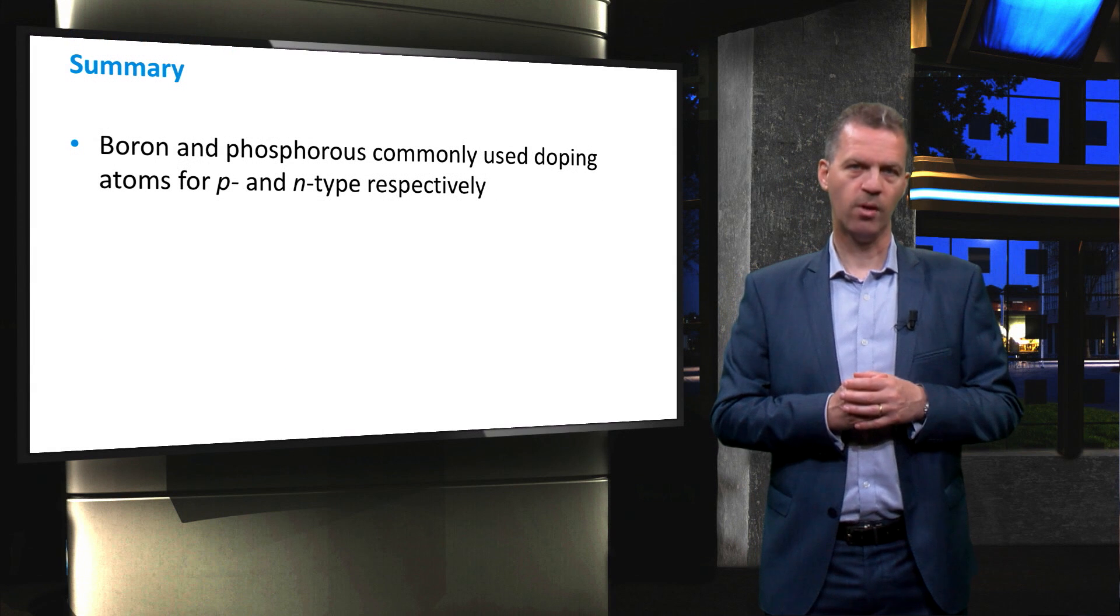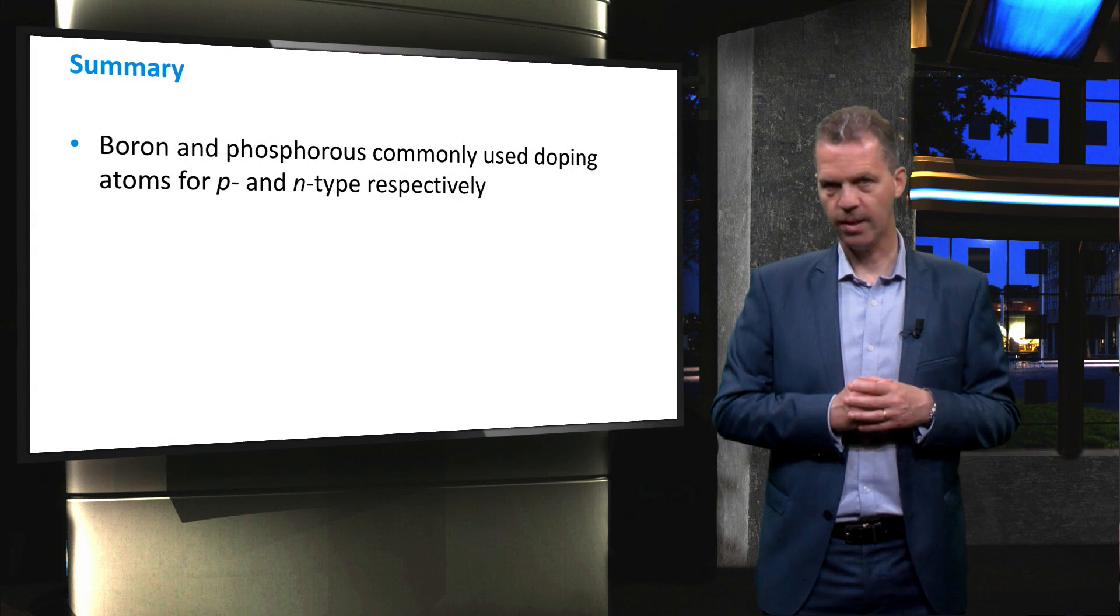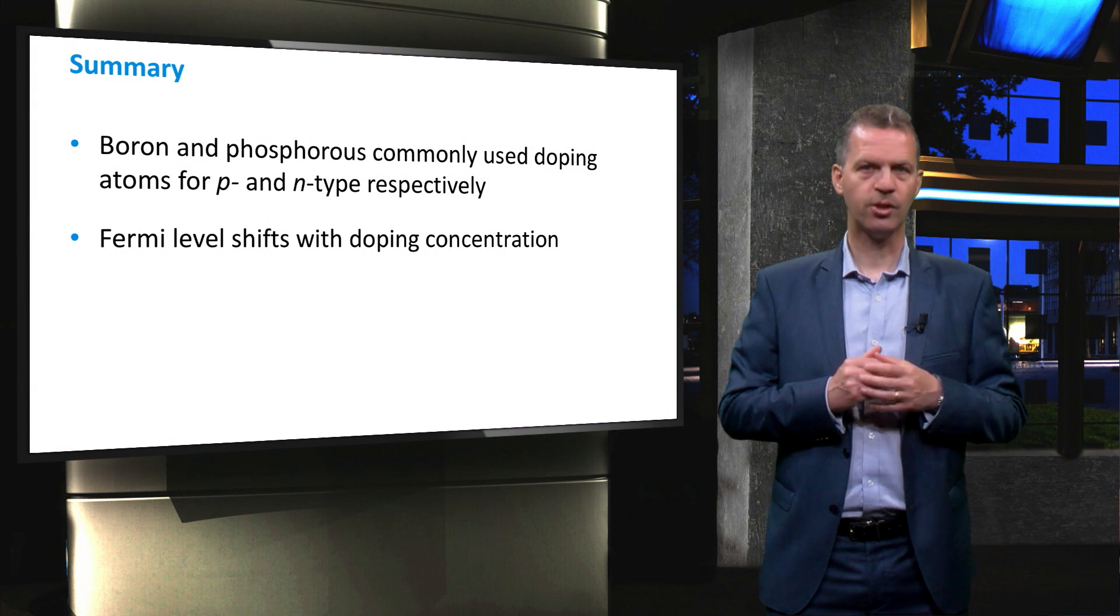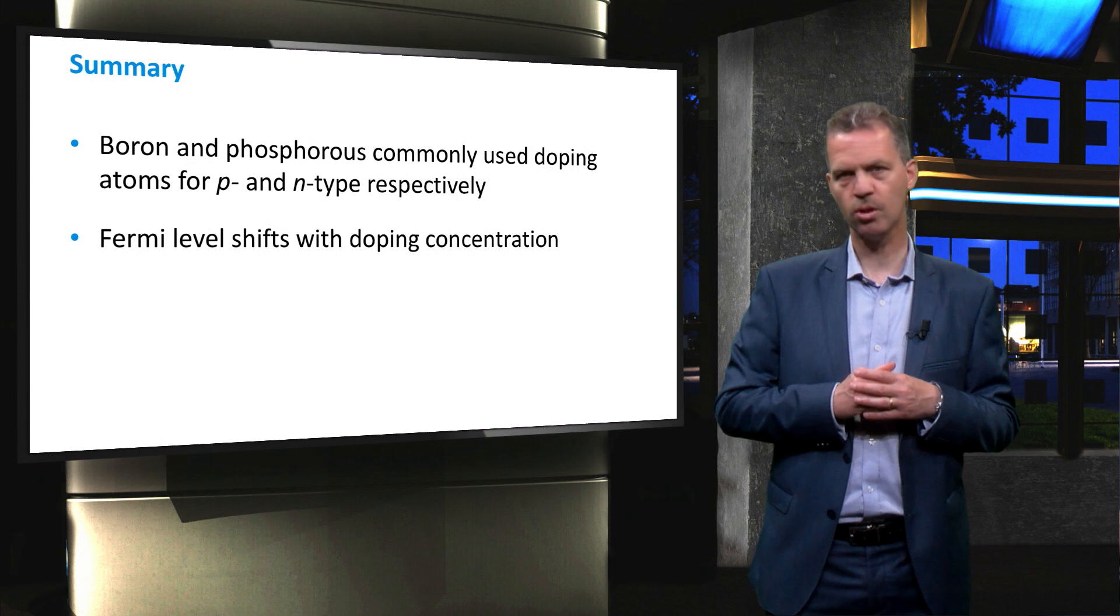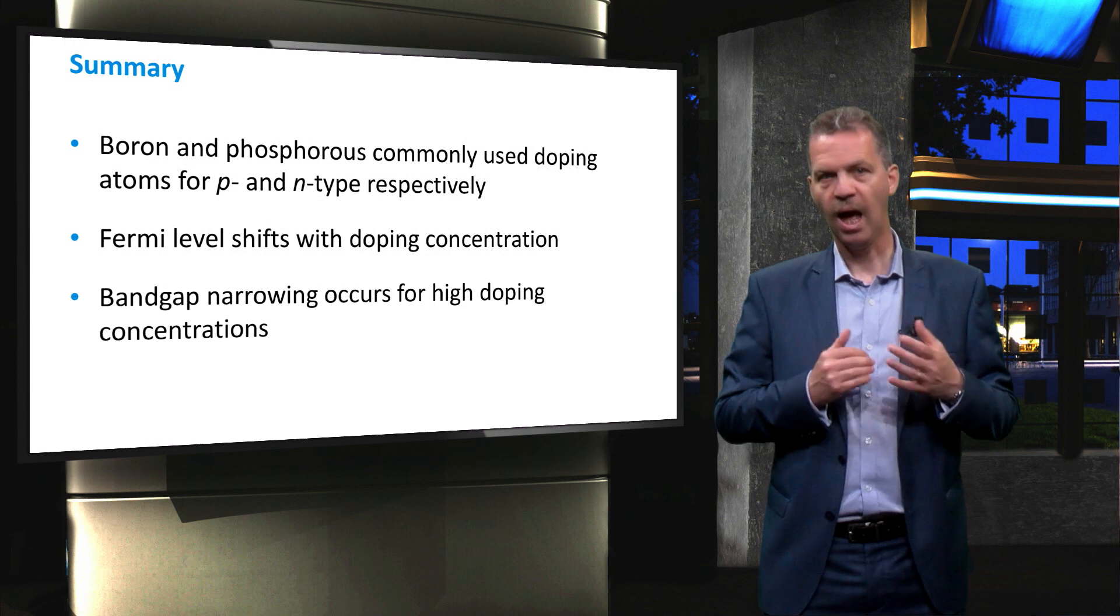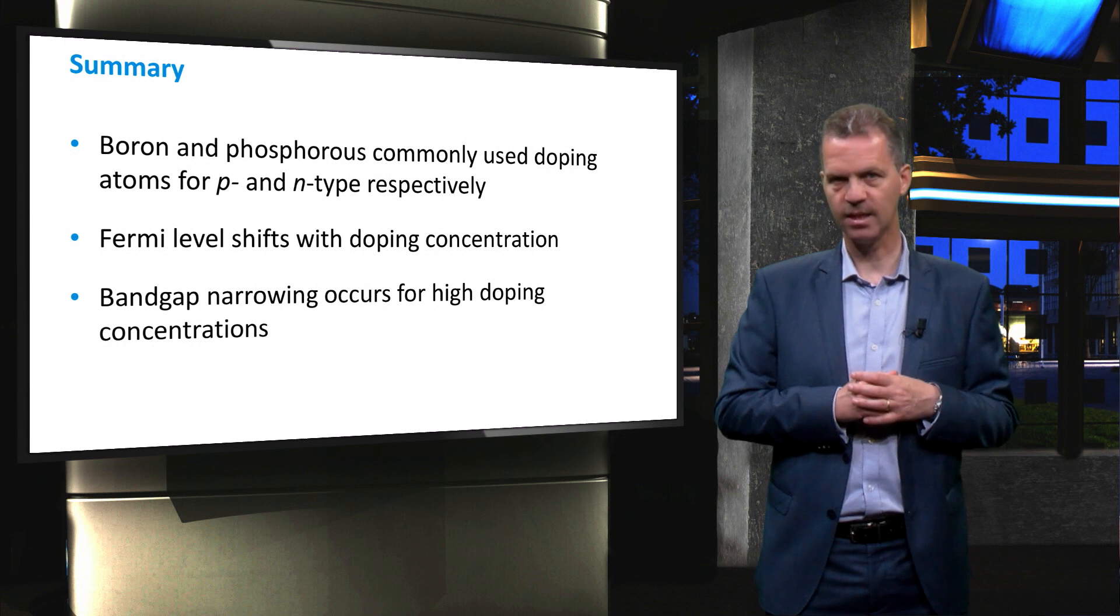To summarize this video, we have discussed the most frequently used donor and acceptor elements to make doped crystalline silicon. We have shown that the position of the Fermi level will shift towards the valence or conduction band upon increasing the doping concentration. And finally, we have discussed the band gap narrowing effect in silicon, which will occur for very high doping concentrations.